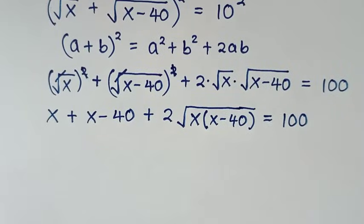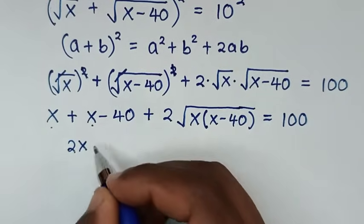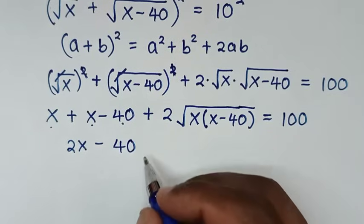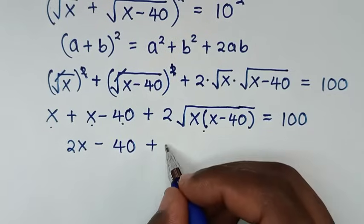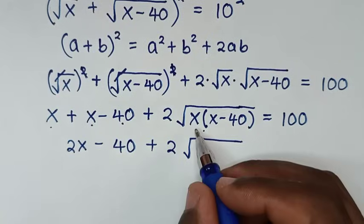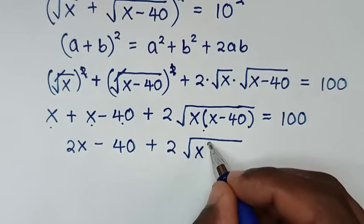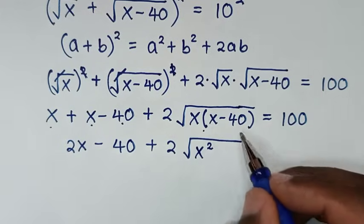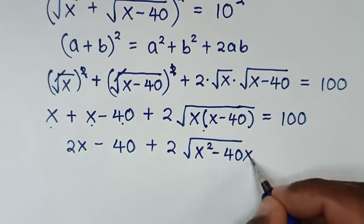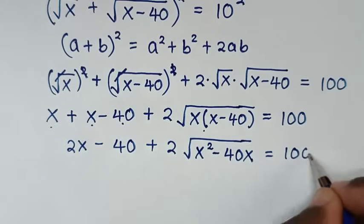In the next step, x plus x is 2x, then minus 40, then plus 2 times square root of x squared minus 40x, and this equals 100.